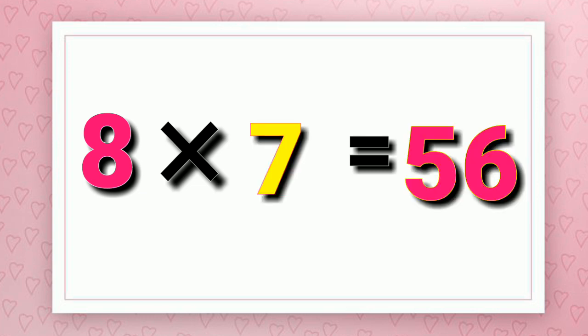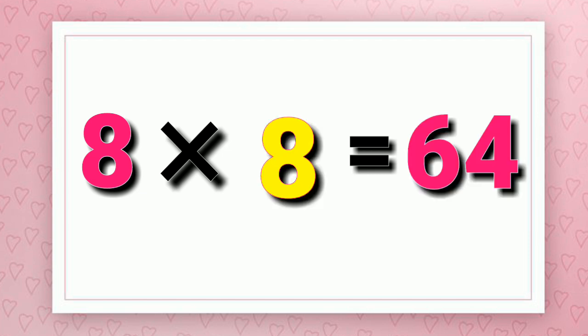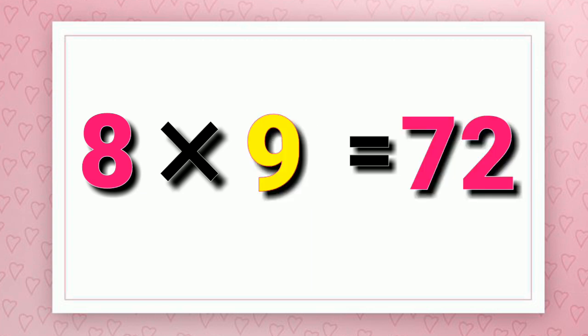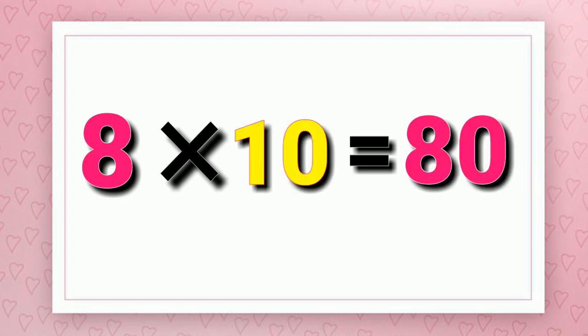Eight sevens are fifty-six. Eight eights are sixty-four. Eight nines are seventy-two. Eight tens are eighty.